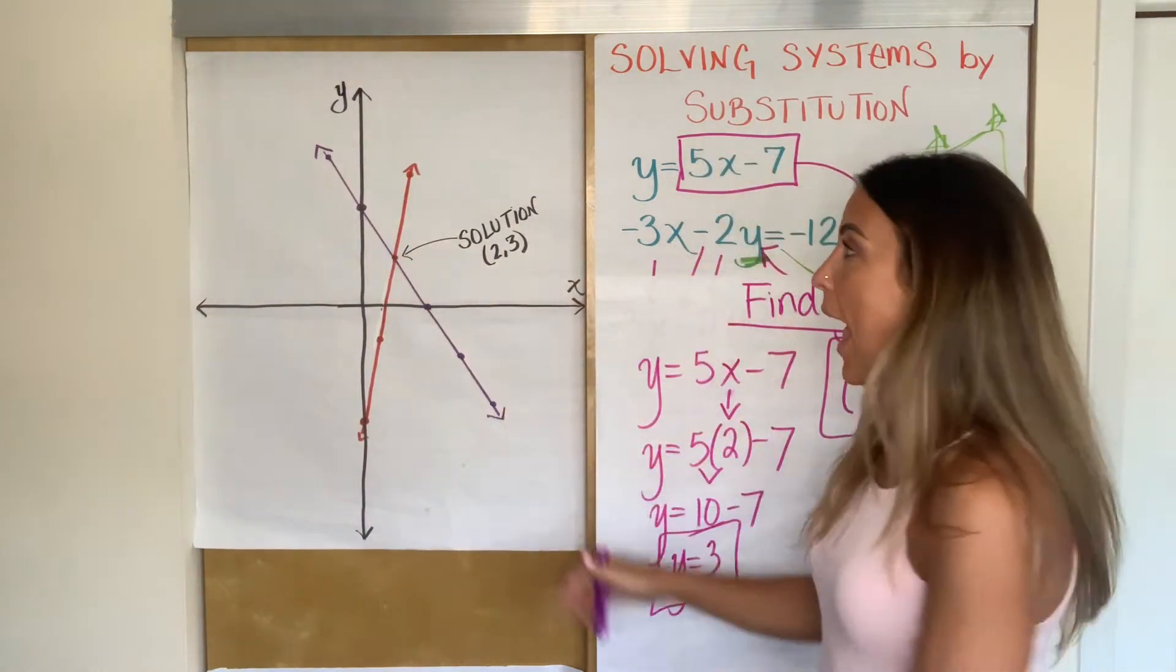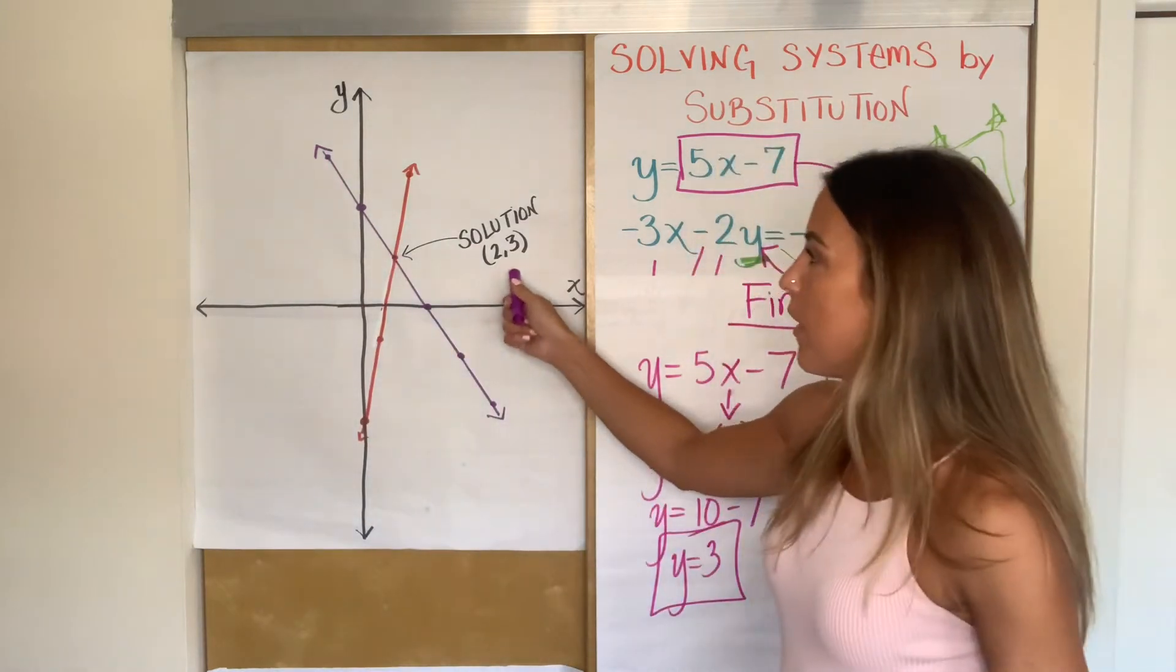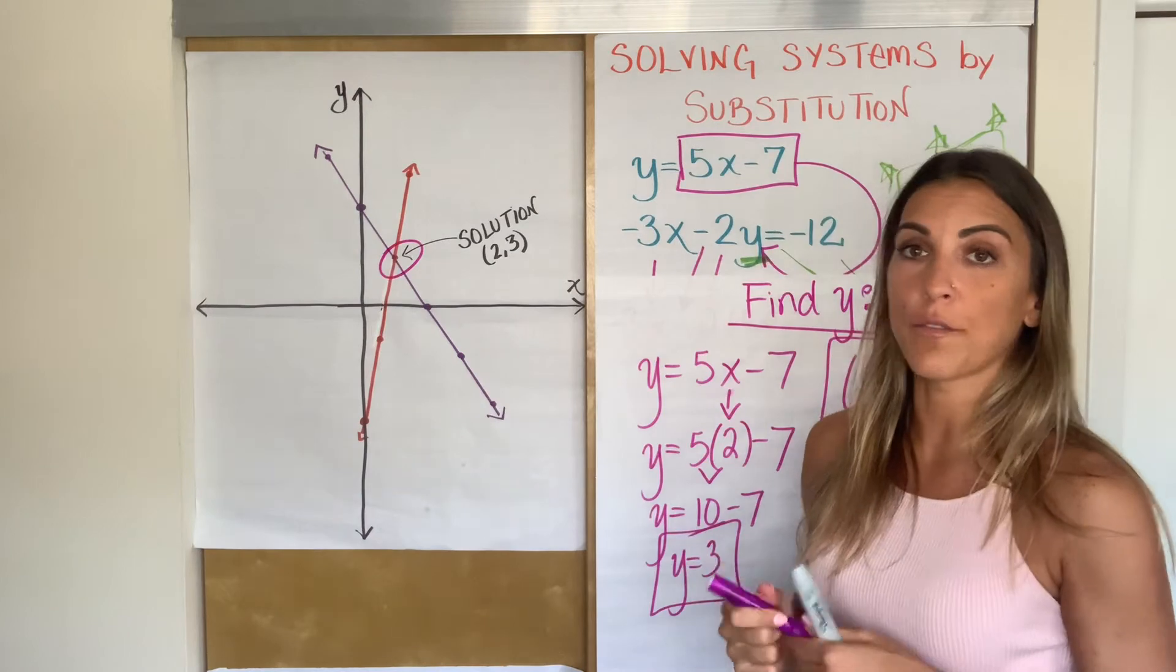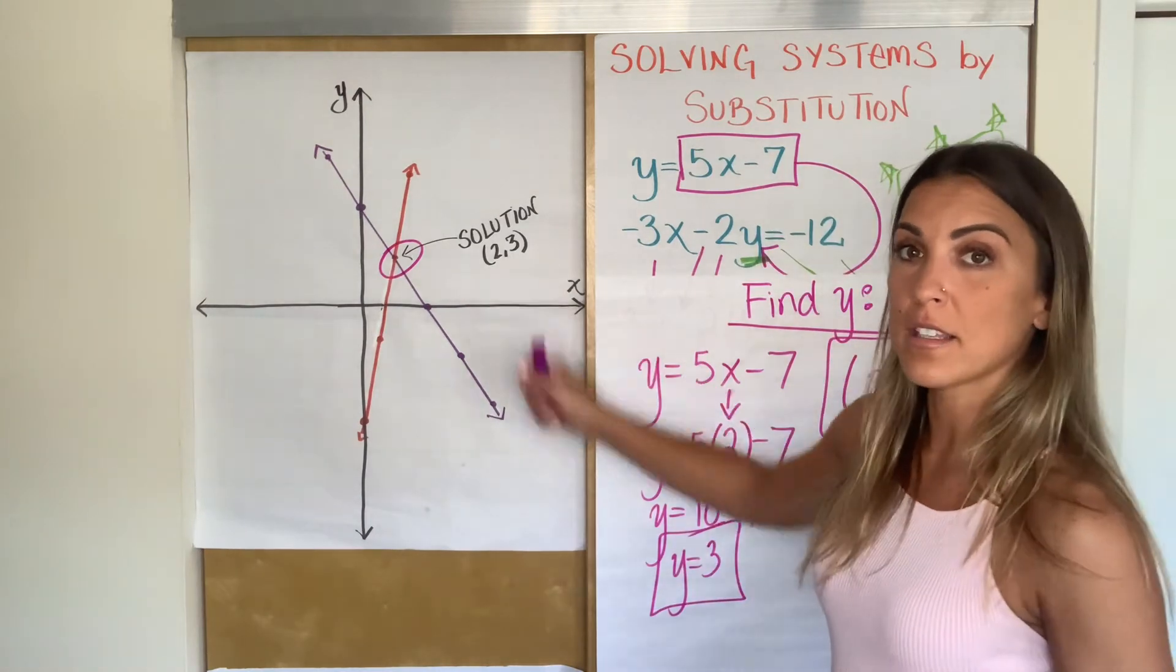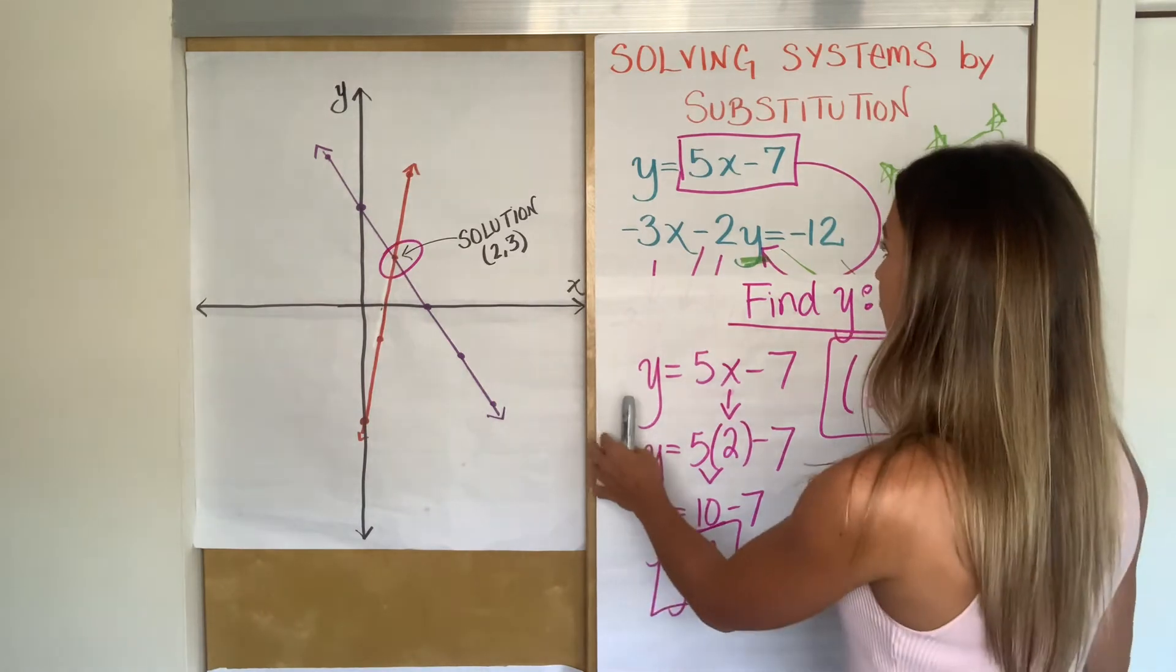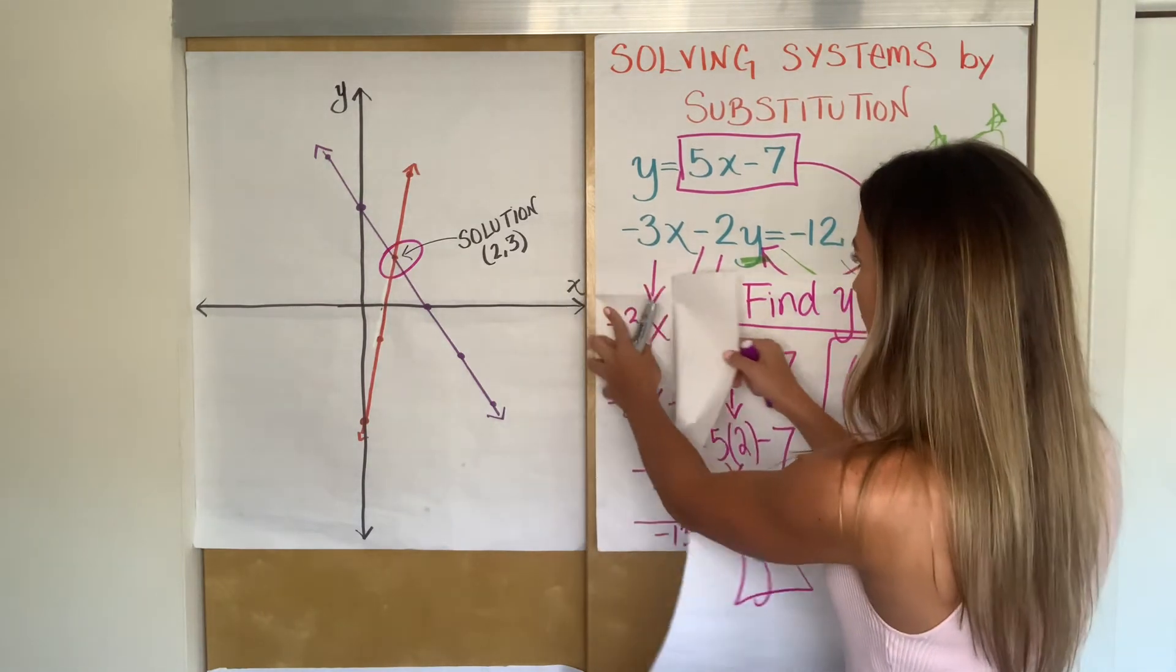So those are the graphs of the two lines. So Y equals 5X minus 7, that's the red line here. And negative 3X minus 2Y equals negative 12. I put that in Y equals MX plus B and that's the purple line. And when you graph these two lines, guess what happens? They intersect at that solution point 2, 3. Just showing us in a different way that that is the solution of the equation. And before I go on to another example, I do think it's always important to check whenever we can. So we're going to do a check.